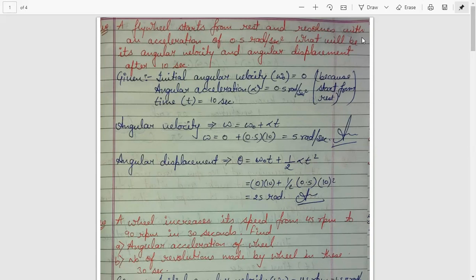What is the angular velocity? Omega equals to omega-0 plus alpha-t. Putting all values, the angular velocity works out to 5 radian per second. What is the angular displacement formula? Theta equals to omega-0 times t plus one-half alpha t squared. Putting all the values, theta equals to 25 radian.